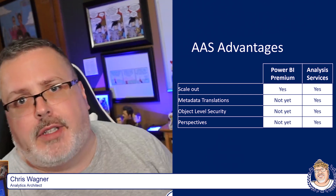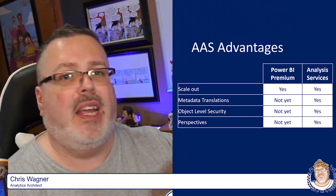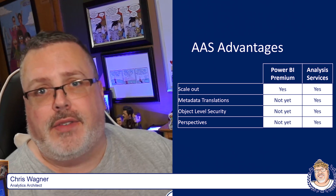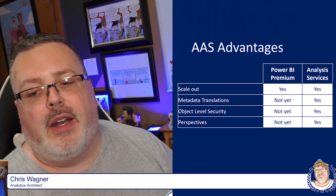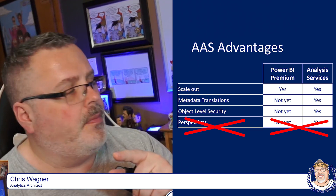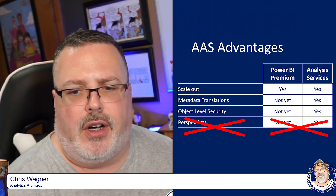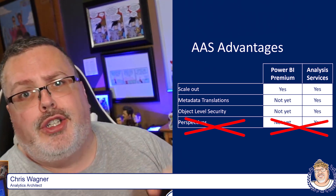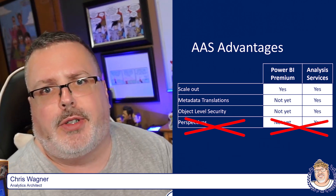Number three: object-level security. Object-level security is when you need to secure someone so that they can't even see a table exists inside your model. That's something Analysis Services allows you to do, but you cannot do inside Power BI Premium Gen 2. And then the final one is perspectives — something you cannot do. Well, actually, they crossed that off in August. Power BI Luchador, you've got your work cut out showing me why I'd switch over to Power BI Gen 2.